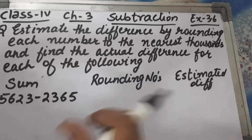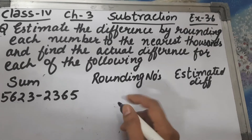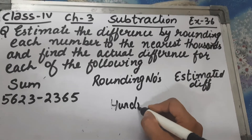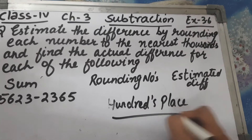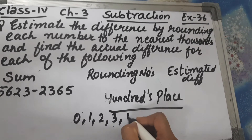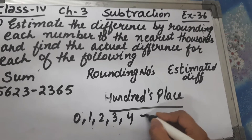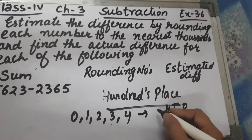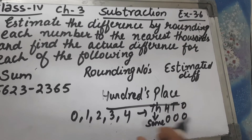First of all we will round off the numbers to the nearest thousand, and after that we will find the estimated difference. To round off a number to the nearest thousand, we check the hundreds place. If the hundreds place is 0, 1, 2, 3, or 4, then your ones, tens, and hundreds place will become zero and the thousands place will remain the same.